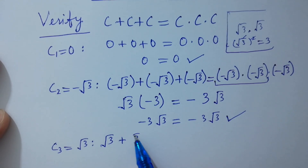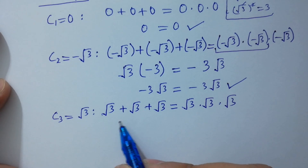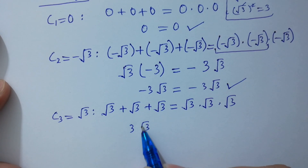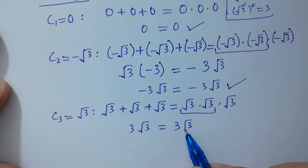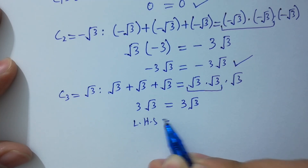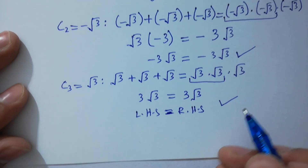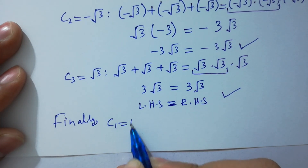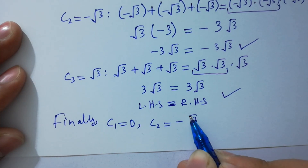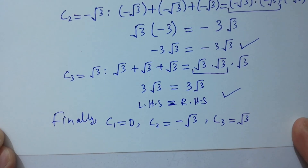Now for c₃ equal to square root of 3: square root of 3 plus square root of 3 plus square root of 3 equals 3 square root of 3 on the left hand side, and square root of 3 times square root of 3 times square root of 3 equals 3 square root of 3 on the right hand side, which is also absolutely correct. So finally, c₁ equals 0, c₂ equals minus square root of 3, and c₃ equals plus square root of 3 — three solutions.